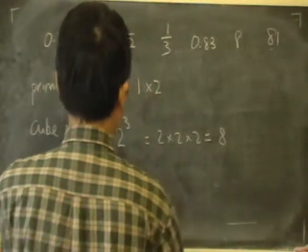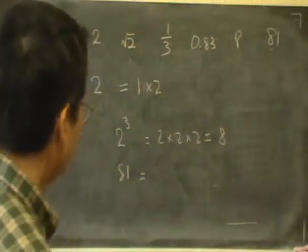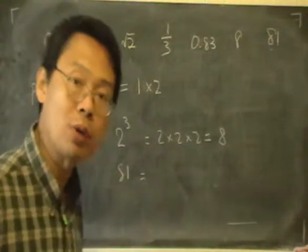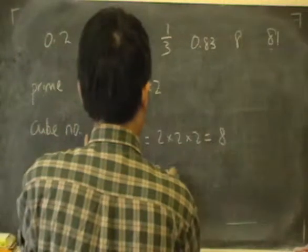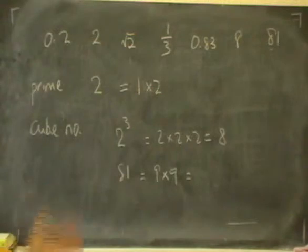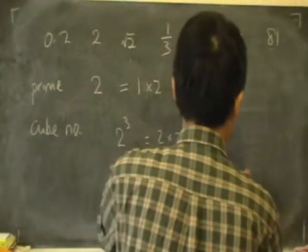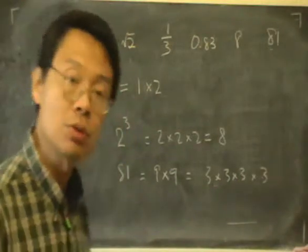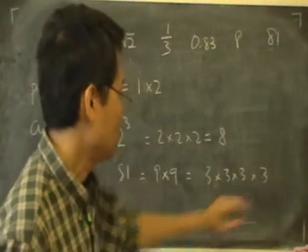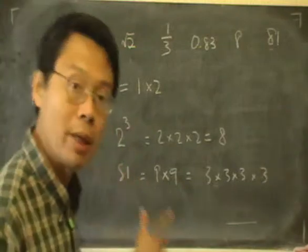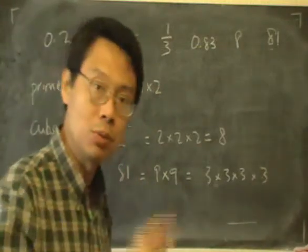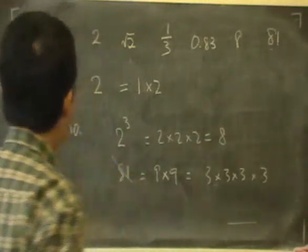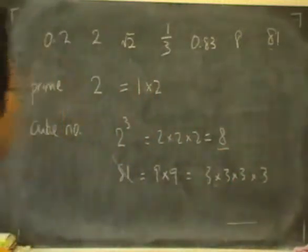The quick way, if possible, is to write it as a product of prime numbers. So let's have a look. 81 is actually 9 times 9, again from the times table. And 9 is 3 times 3. So we have 3 times 3 times 3 times 3. If you look at this, there are 4 factors of 3. So it's actually 3 to the power of 4, it's not 3 cubed. And because these are all the prime factors already, it's not possible to make up or find a whole number that will give 81 when you take the cube. So therefore, 81 is not a cube number. So the only cube number here is 8.